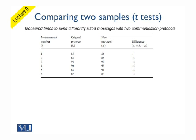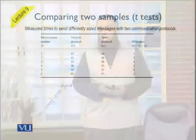We calculate the differences between paired readings. You can see on the slide that there are six measurements — six readings for the original protocol and six for the new protocol, paired together, giving us six readings of differences. We want to answer: is there a real difference between these two protocols, or is this difference just due to random variation? For that, we need to calculate the standard deviation of the differences and then the standard error.